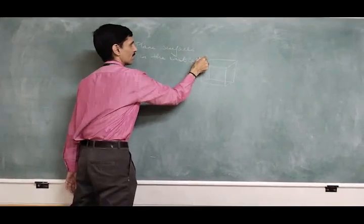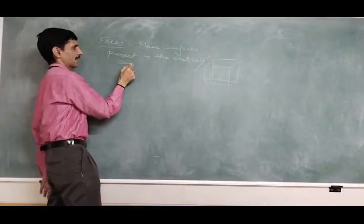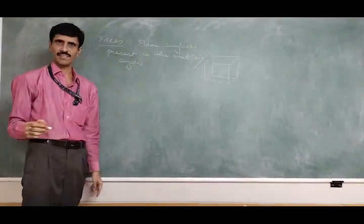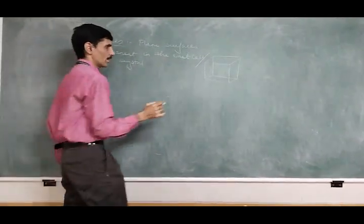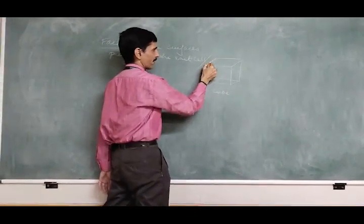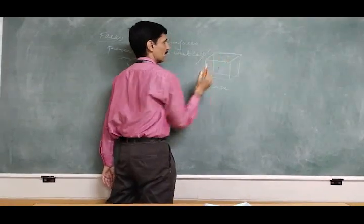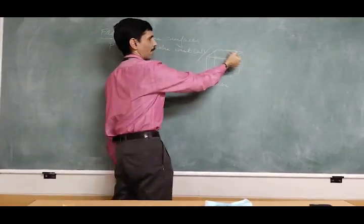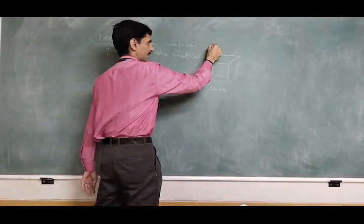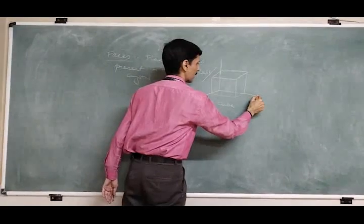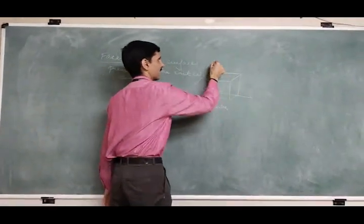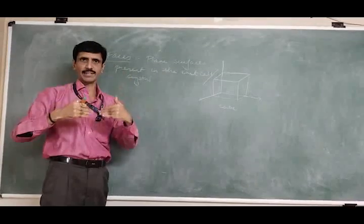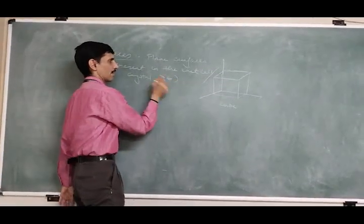The plane surfaces present in the unit cell, and throughout the entire crystal, are called faces. When you consider this cube, the faces are: the top face, the bottom face, the left, the right, the front, and the back. So there are six faces when you consider a cube.